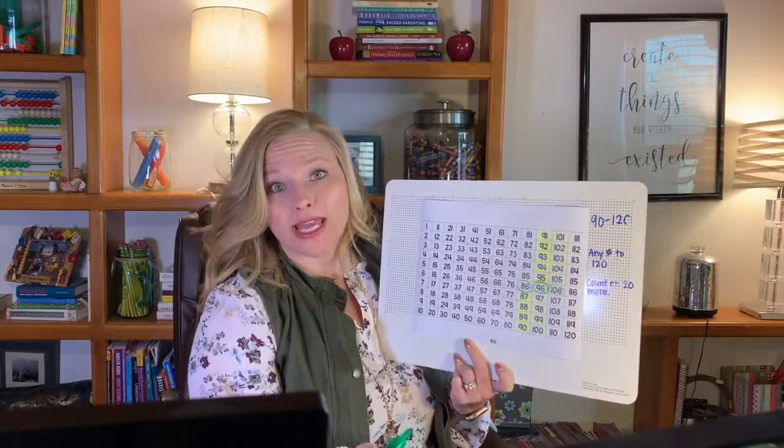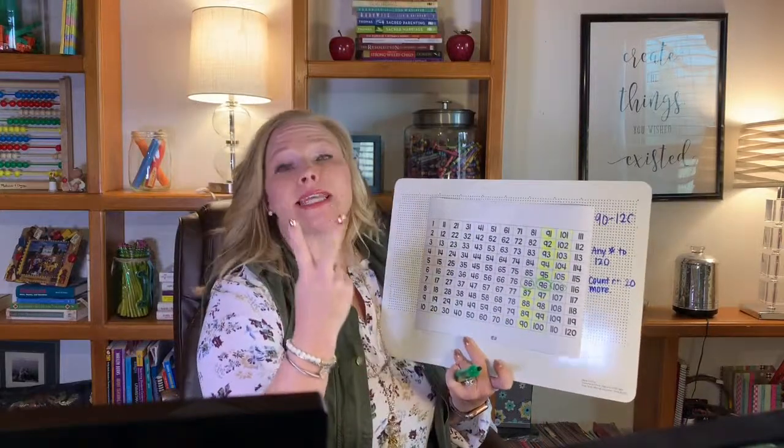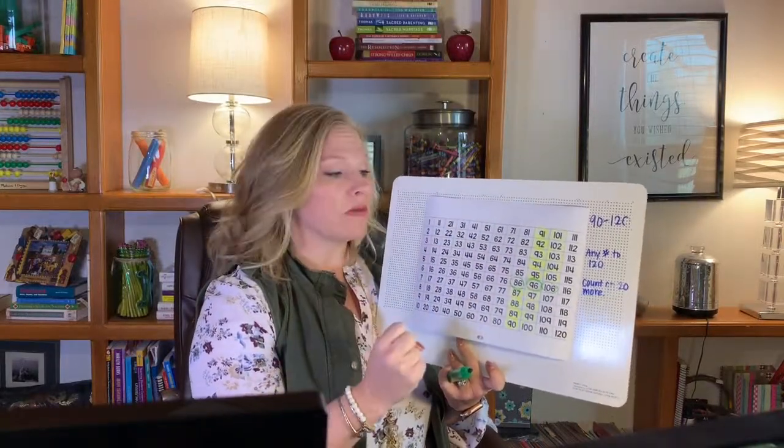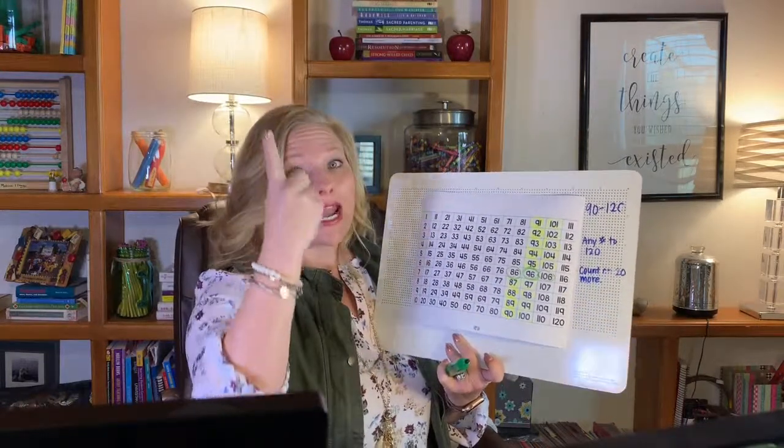Class, close your eyes. Let's try again. Class, today's number is 86. Boys and girls, let's count on 20 more. 20 more is two tens. Class ready? Begin. 86, 96, 106.